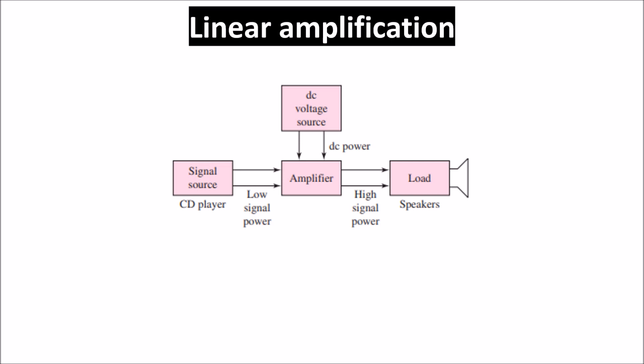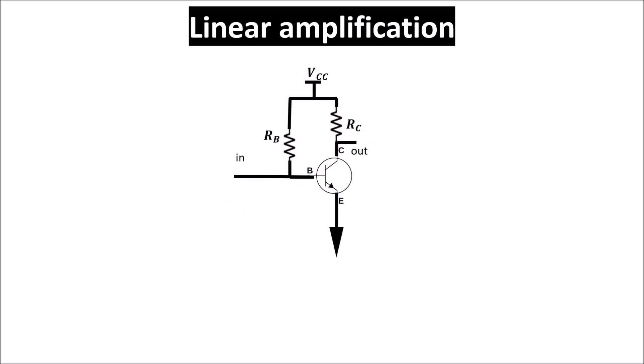We can use a BJT for this but under some hypothesis. For example, this common emitter configuration with one BJT is an amplification stage, but is it linear? We'll see later.